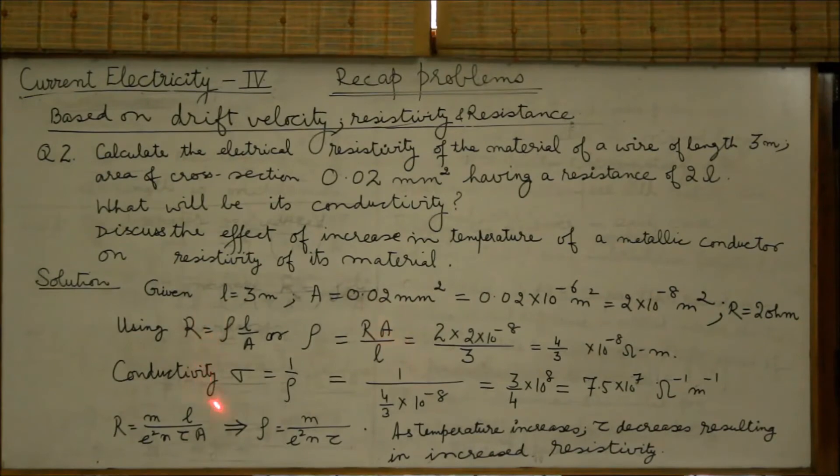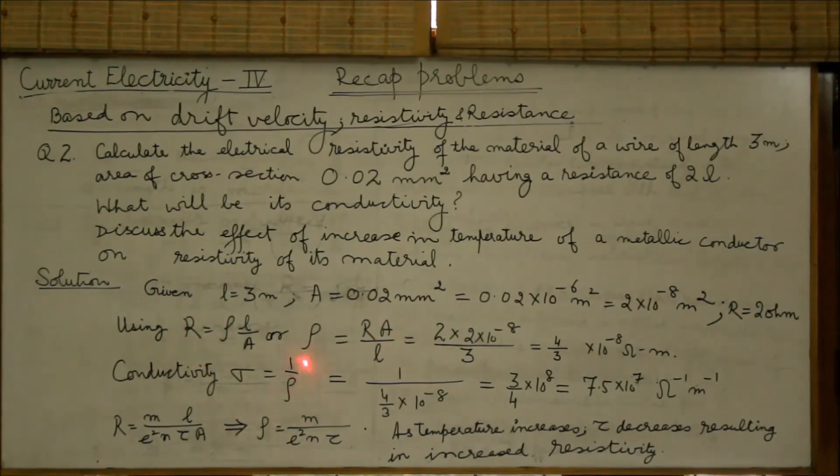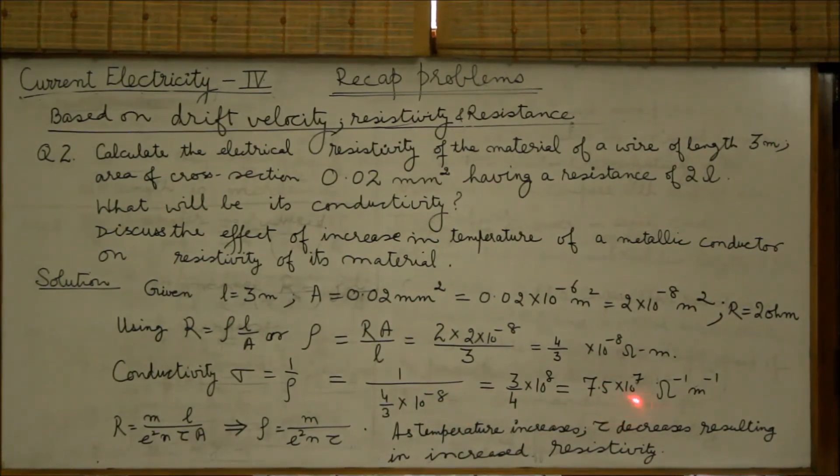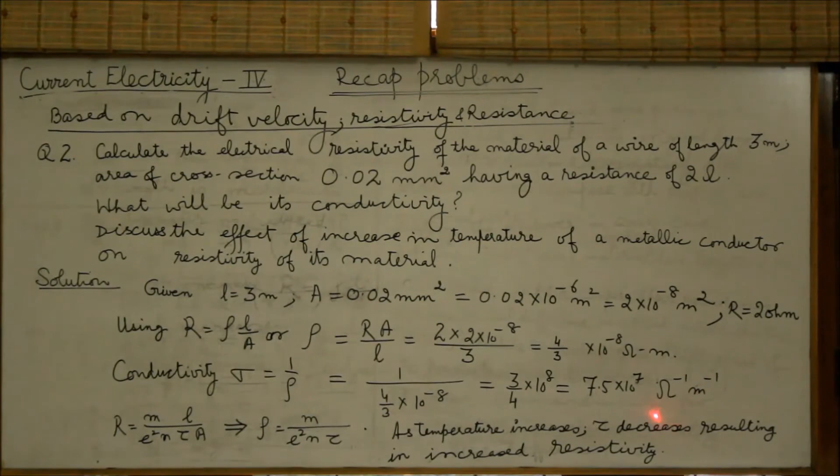The conductivity of a material is reciprocal of its resistivity. So, sigma is 1 over rho equal to 1 over 4 by 3 into 10 to the power minus 8, equal to 7.5 into 10 to the power 7 ohms inverse meter inverse.